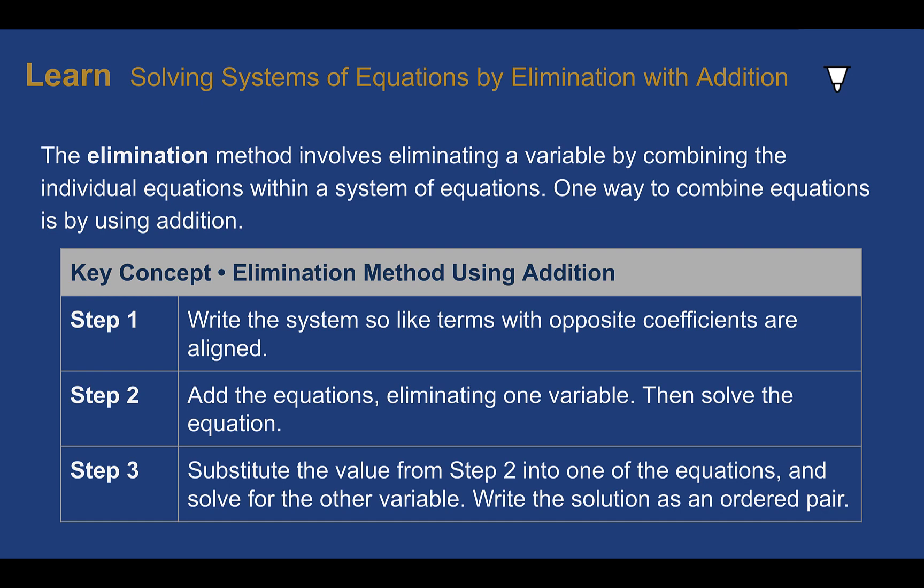The key concept here is elimination using addition. First, you write the system so the like terms with opposite coefficients are aligned. Then we add the equations, which will eliminate one variable — adding just like we learned in elementary school. Then we solve the remaining equation, and once we know what one variable is worth, we plug that value in and solve for the other variable. Finally, write our answer as a coordinate.